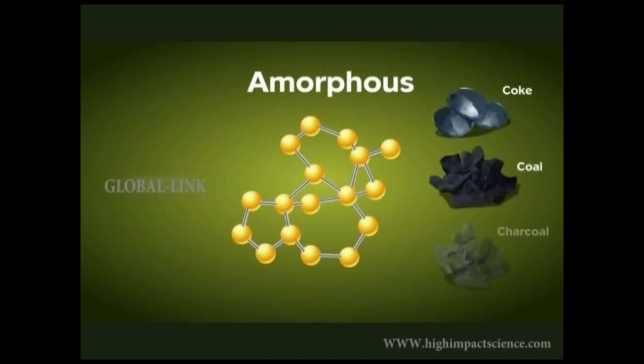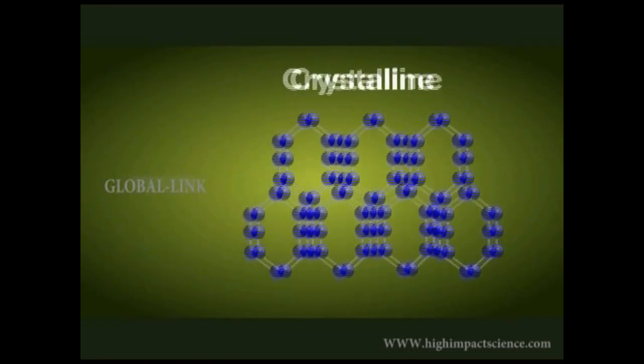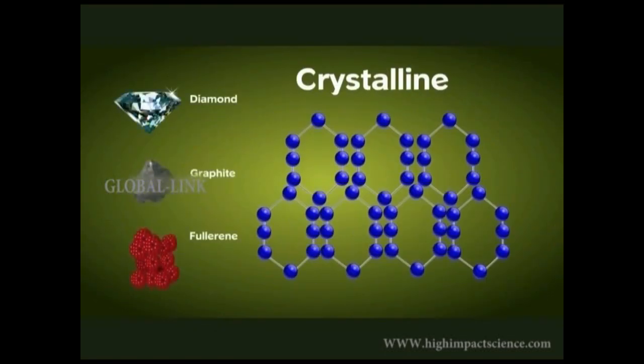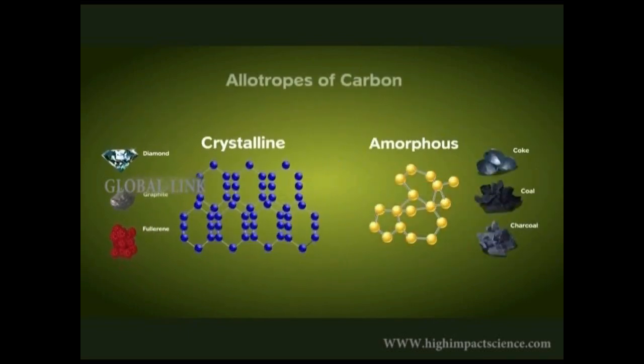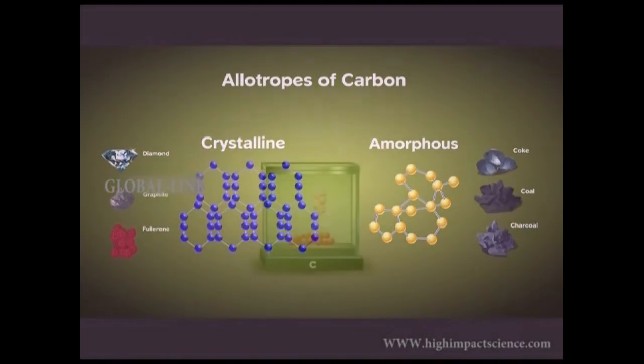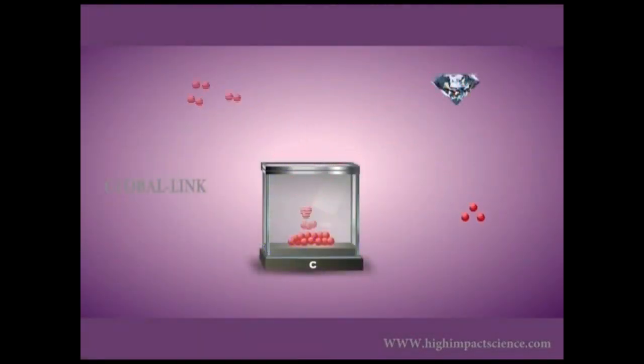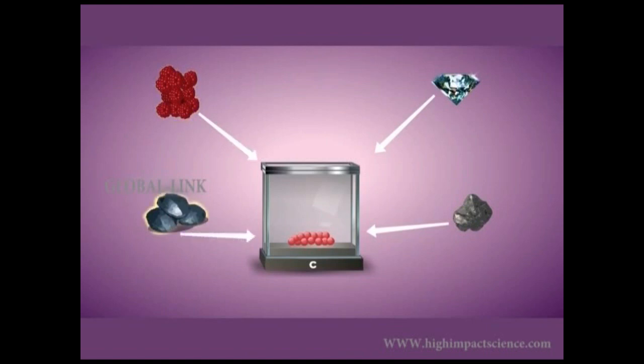Coal, coke, and charcoal are amorphous forms of carbon. Diamond, graphite, and fullerene are crystalline forms of carbon. Both these forms are called allotropes of carbon. Allotropes are forms of the same element which exhibit different physical properties but with the same chemical composition.